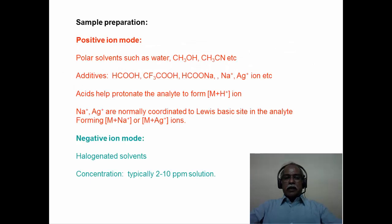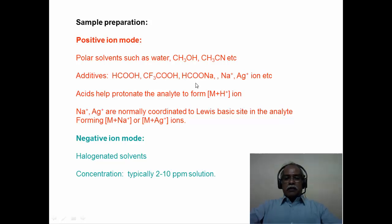Sample preparation is important in ESI-MS. Typically polar solvents such as water, methanol, and acetonitrile are used. Water and methanol can donate a proton to the analyte molecule, producing an M+H protonated species. Additives like formic acid, trifluoroacetic acid, sodium acetate, or silver ions can be added — proton sources are added to protonate the analyte, while sodium salts are added to form M+Na or M+K ions, bringing the analyte into a charged form.